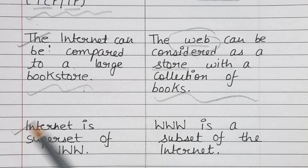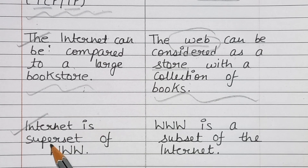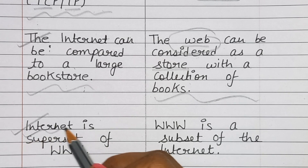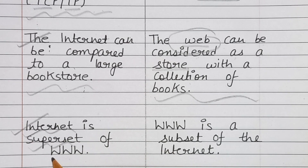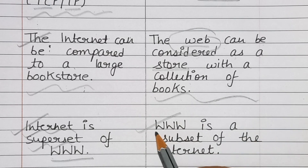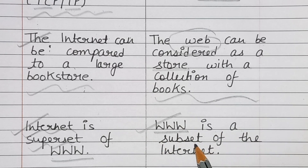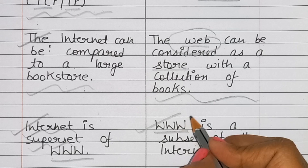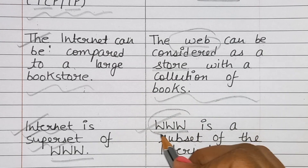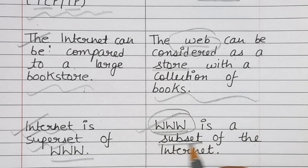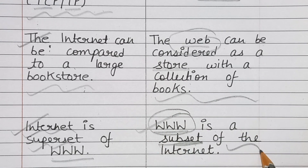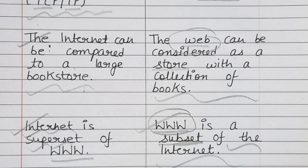Next difference: internet is a superset of the world wide web, while the world wide web is a subset of the internet.